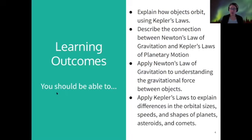And then finally we're going to use Kepler's laws to explain differences in the orbital sizes, speeds, and shapes of planets, asteroids, and comets. So planets, asteroids, and comets all have different shapes of orbits and different speeds during different parts of their orbits, and you'll be able to explain exactly why that is by the end of this class.